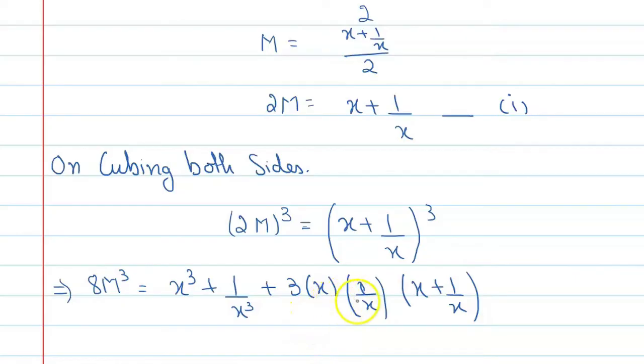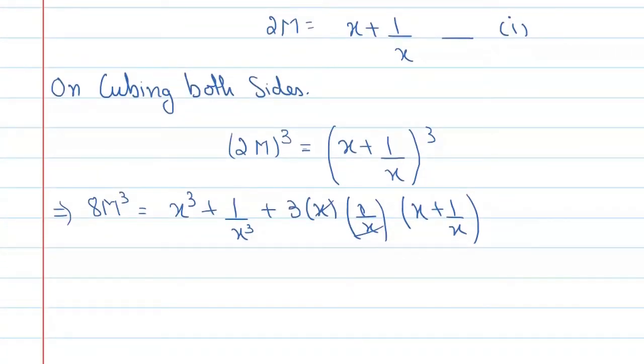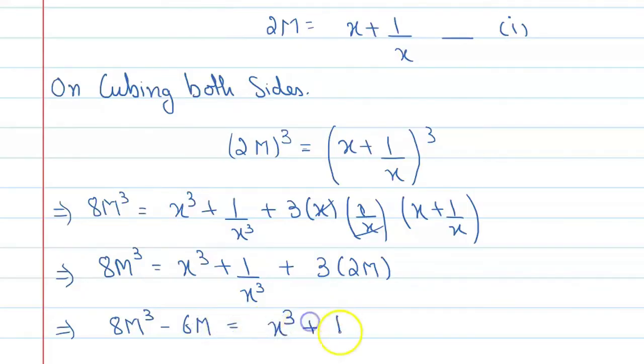Alright, now from the first equation we can say x plus 1 by x is equal to 2M, so we will put here and this and this will get cancelled. Okay, so here we can say 8M cubed equal to x cubed plus this 1 by x cubed plus 3, and this is 2M, so you can say 3 into 2M from first, so this will become 6M. Alright, and if you shift 6M to the left side, you can say it is 8M cubed minus 6M is equal to x cubed plus 1 by x cubed.